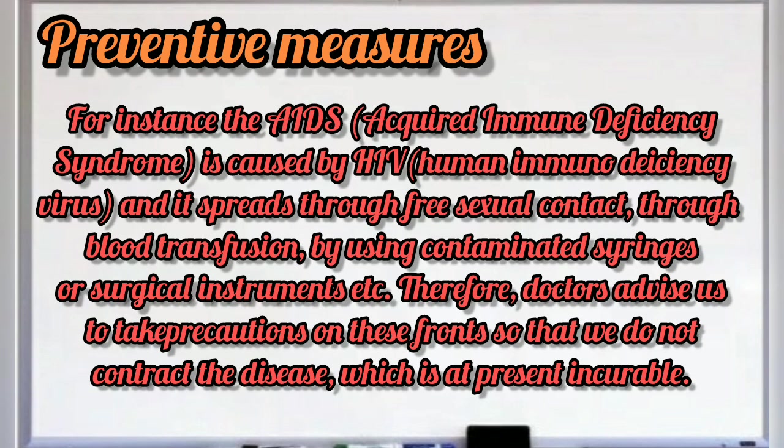For instance, for AIDS — Acquired Immunodeficiency Syndrome — it is caused by a virus called HIV, Human Immunodeficiency Virus. It is spread through unsafe sexual contact, through blood transfusion, and by using contaminated syringes or surgical tools.